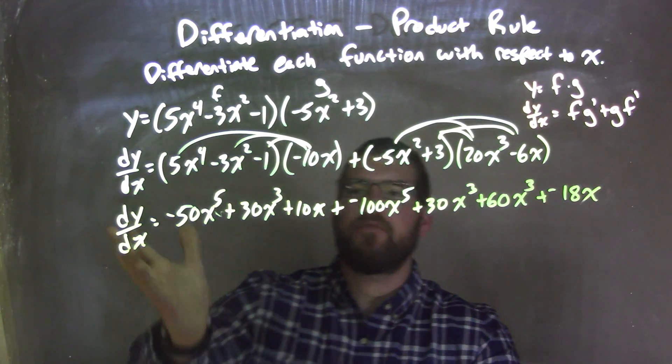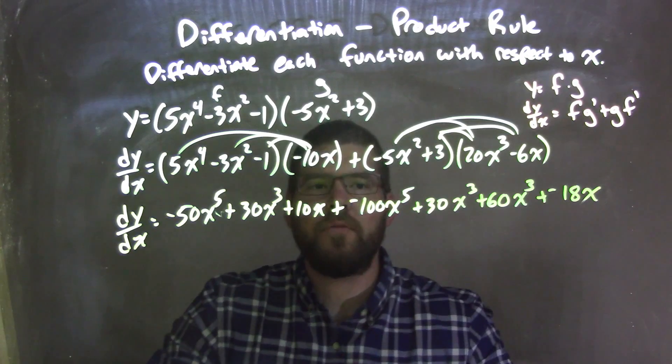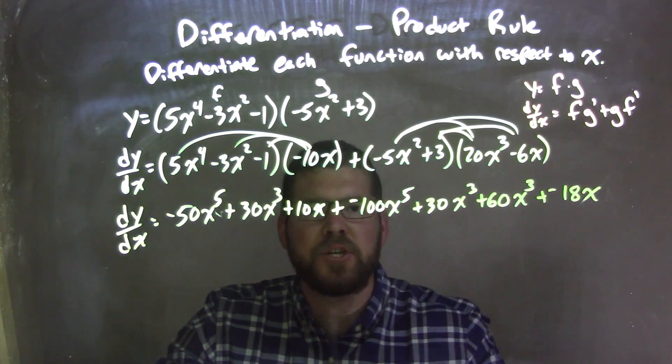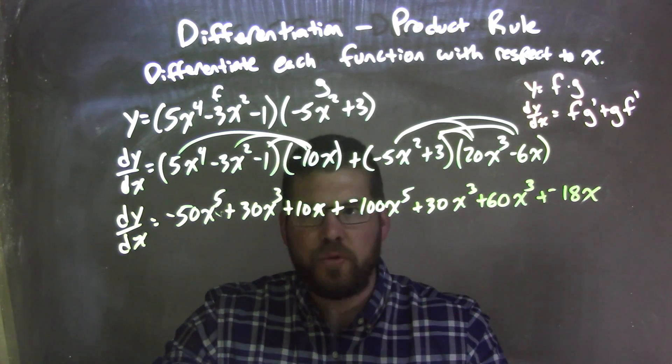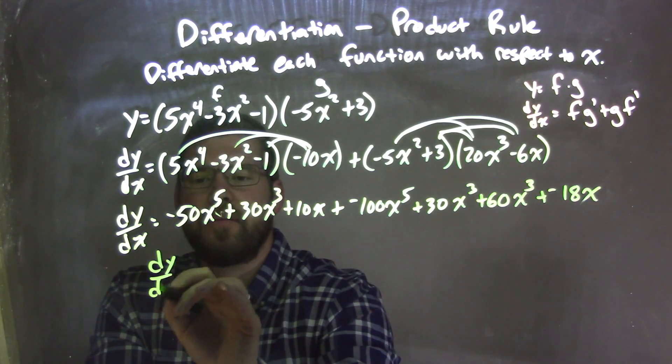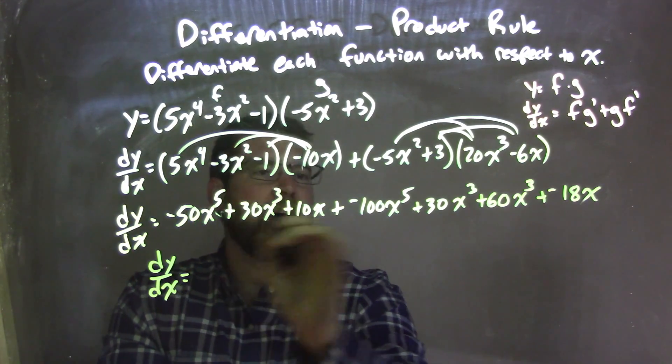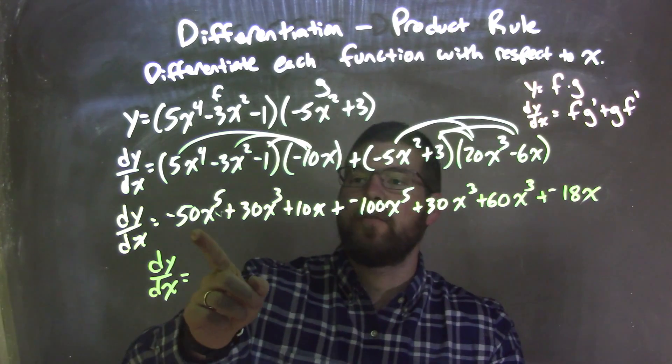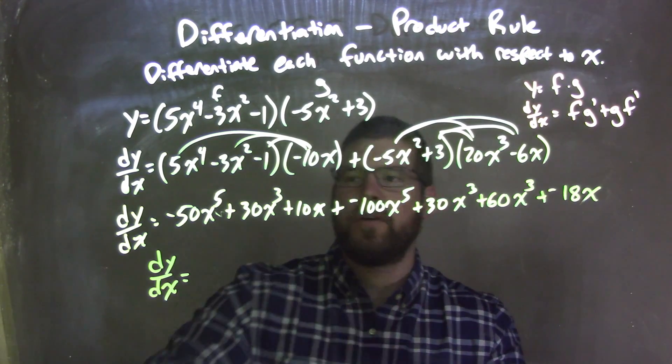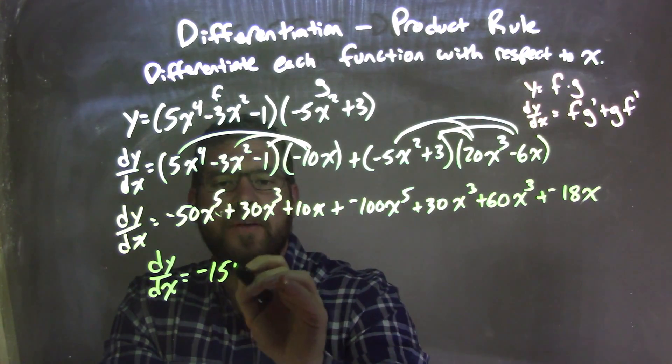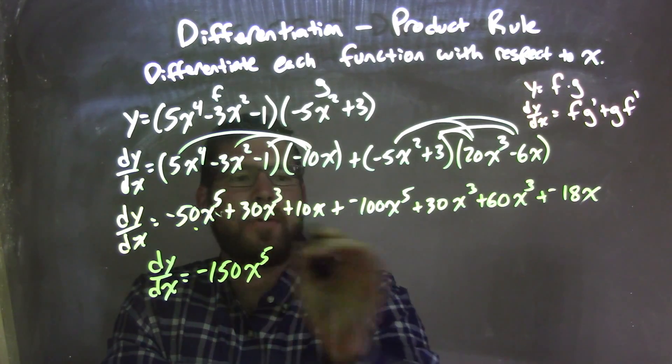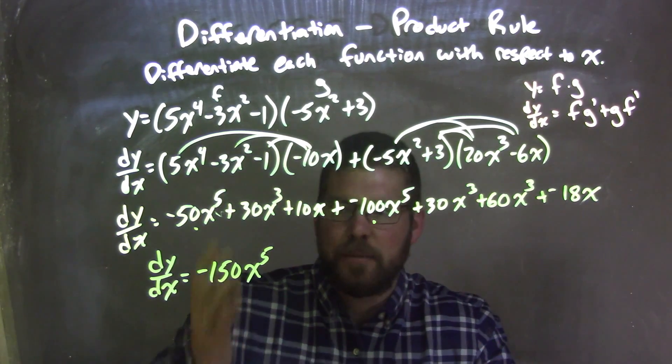Okay, so now we have our long, big derivative. Let's simplify and combine like terms, putting our highest degrees first. I have my highest degree is the 5th power. Negative 50x to the 5th minus 100x to the 5th is negative 150x to the 5th. I put dots underneath showing that I've simplified and brought them down.